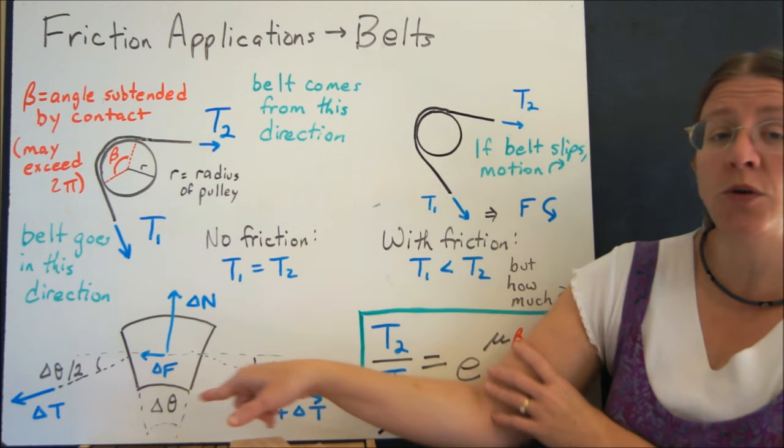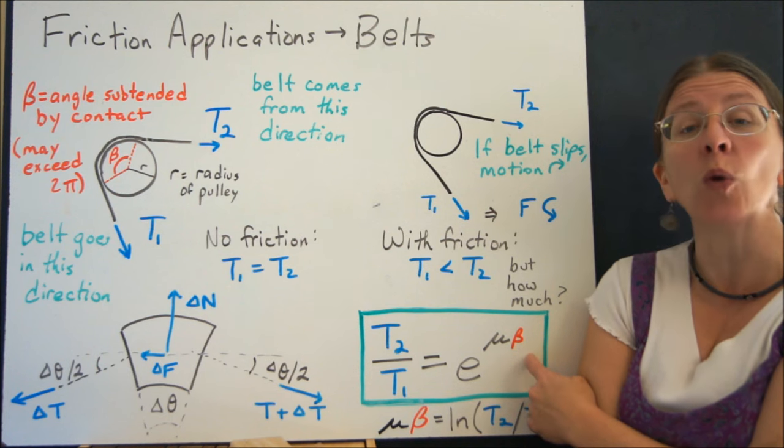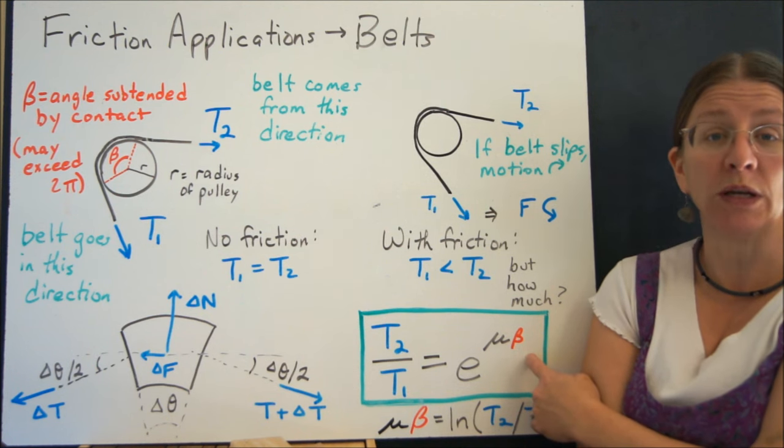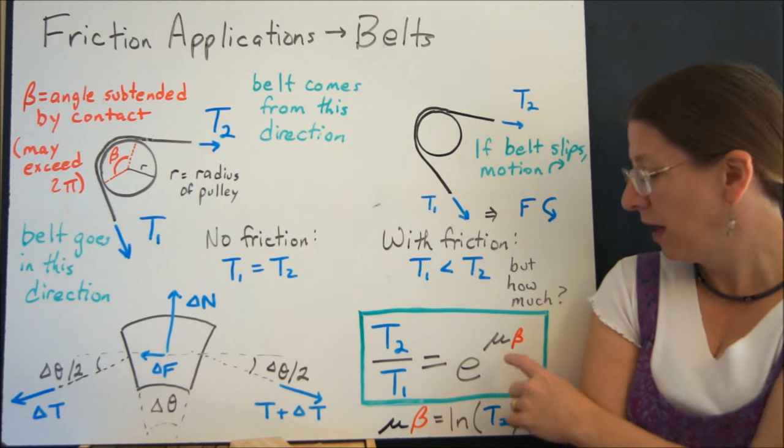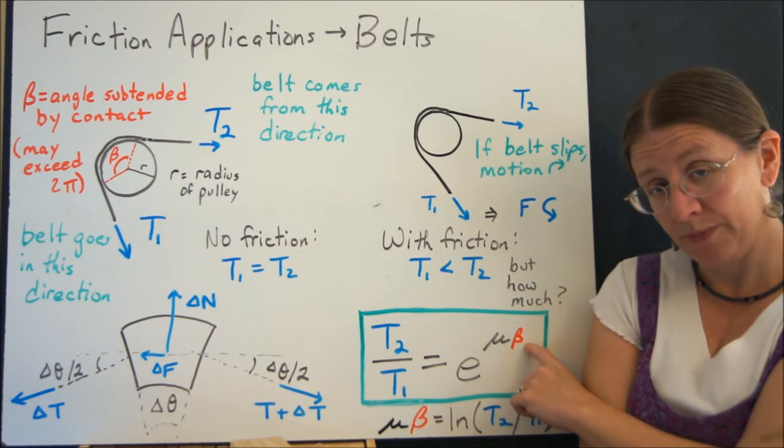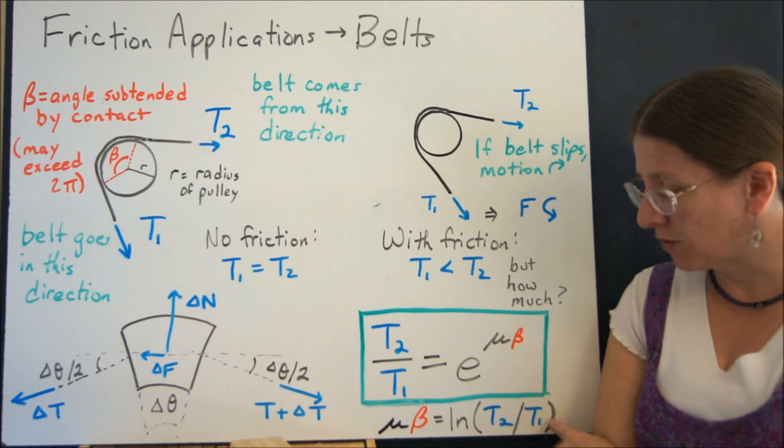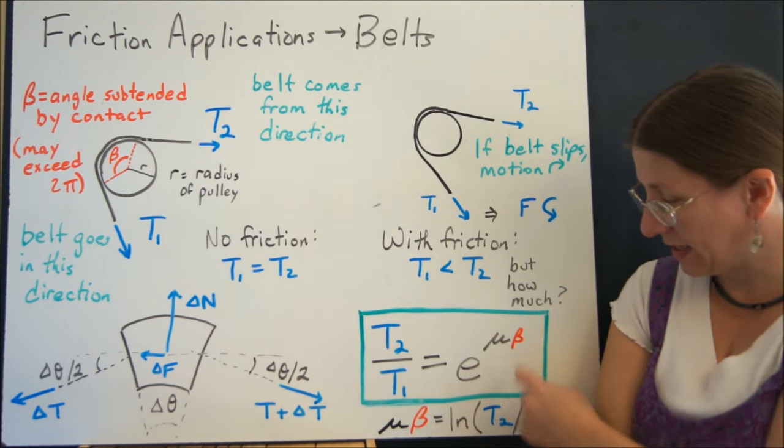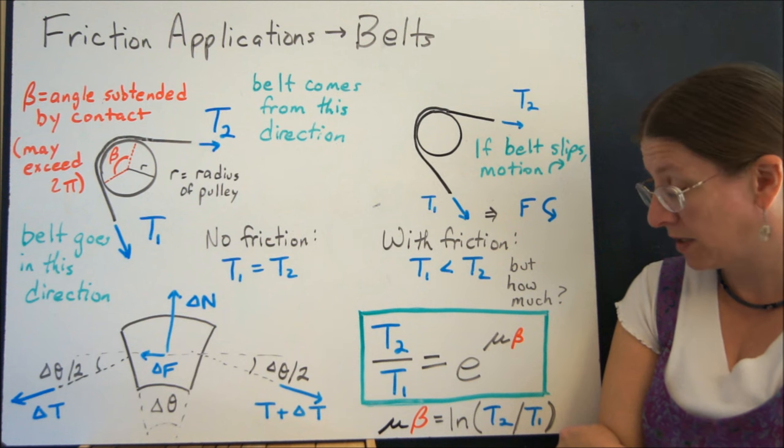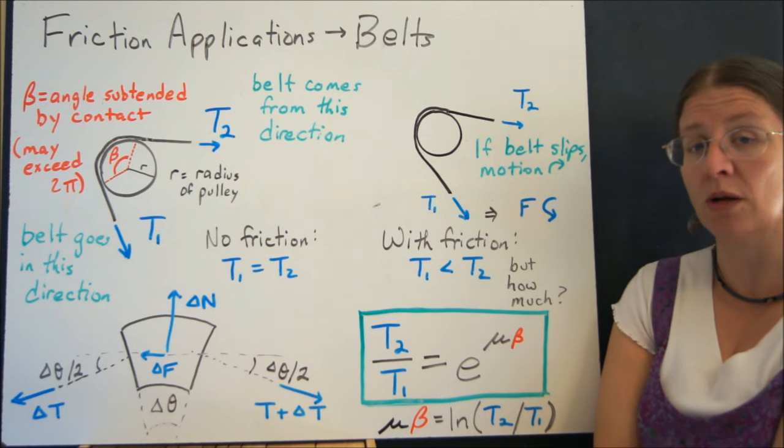Now in the process of doing all of this, you have to deal with the fact that beta has to be in radians, because one of the things we use in the formulas here is the arc length formula. So beta has to be in radians. And there's of course this extra way of doing the same formula: take the natural log of both sides, and then you have μβ is the natural log of T2 over T1.